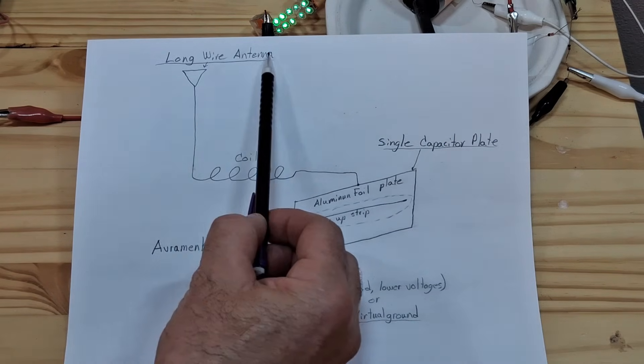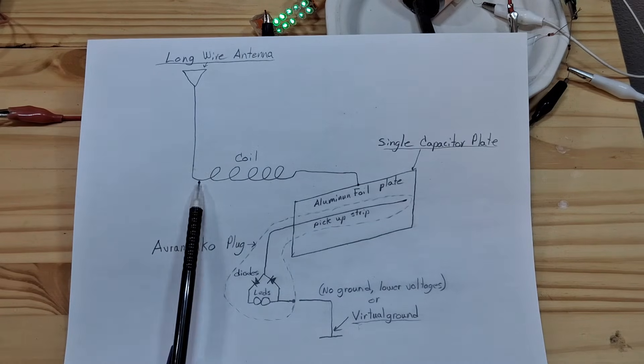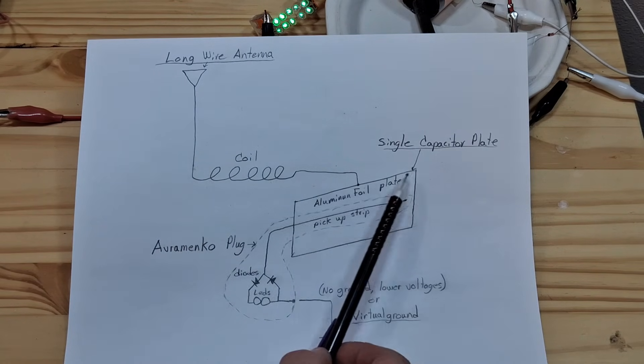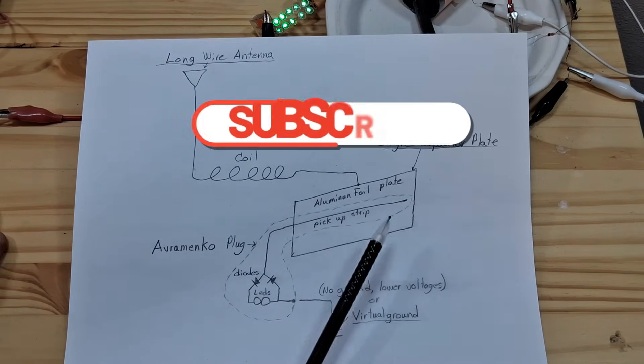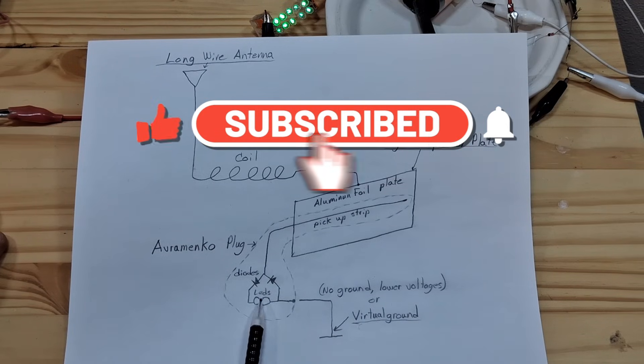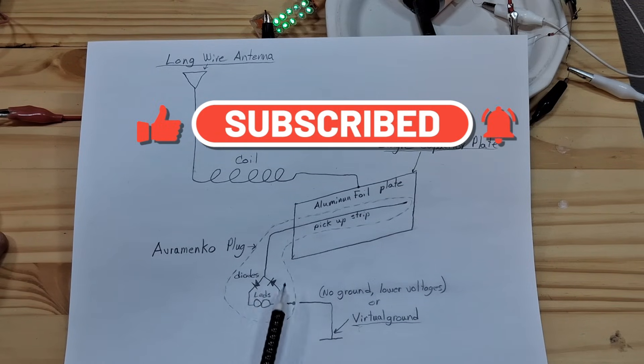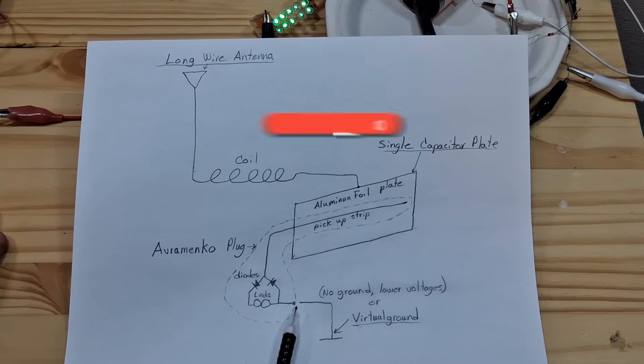So what we have is a long wire antenna with a coil attached to it, and the coil is then attached to a piece of aluminum foil. Then I have a pickup strip that goes down to two diodes into some LEDs, maybe one or several LEDs.